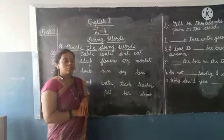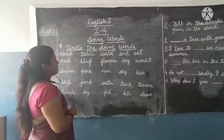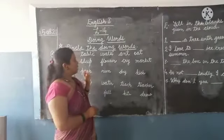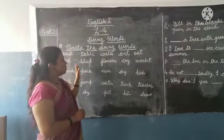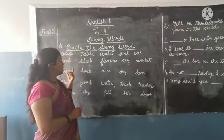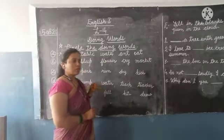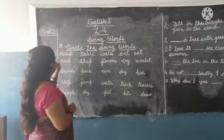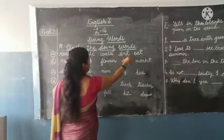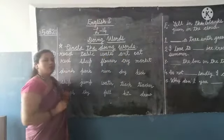First exercise: circle the doing words. We have some sets of words - A, B, C, G - and in each set we have many words. We will circle the doing words only. Let's start. First: read, table, walk, and eat. We know that 'read' is a doing word, so we will circle it.